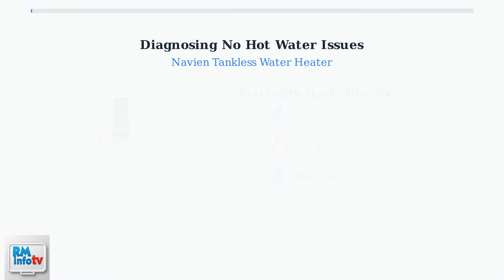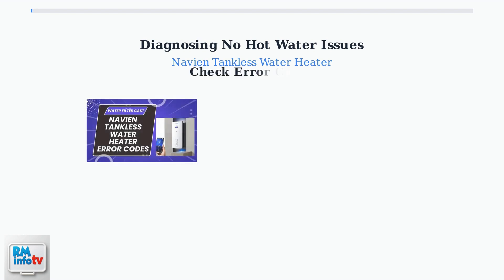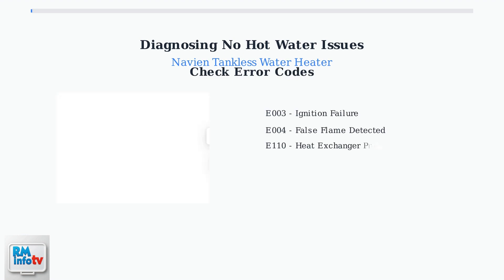Next, examine the control panel for error codes. These diagnostic codes provide specific information about what's preventing hot water production. Common error codes include E003 for ignition failure, E004 for false flame detection, E110 for heat exchanger problems, E01 for ignition issues, and E012 for flame rod problems. Each code points to specific components that need attention.